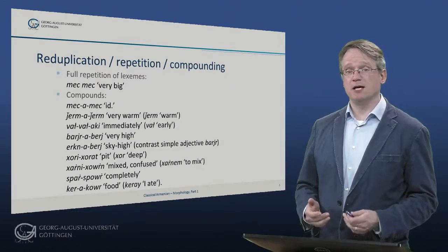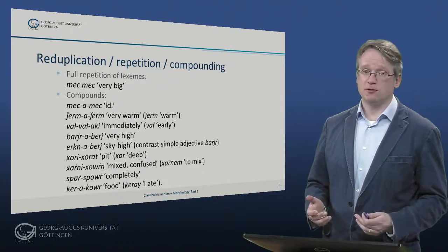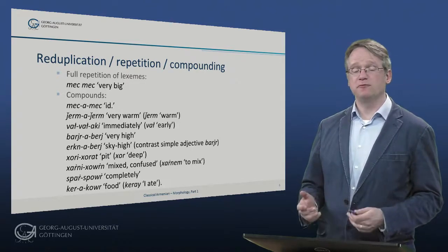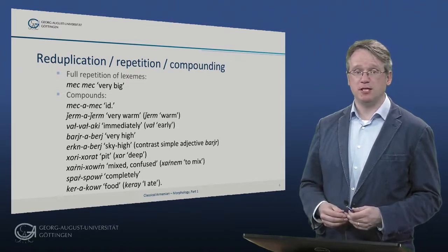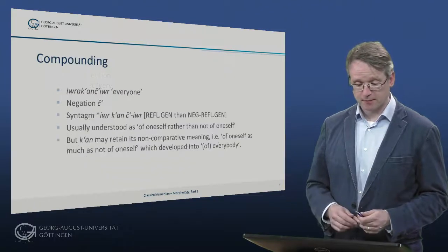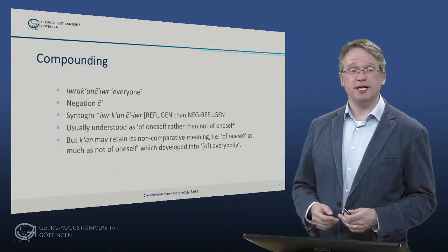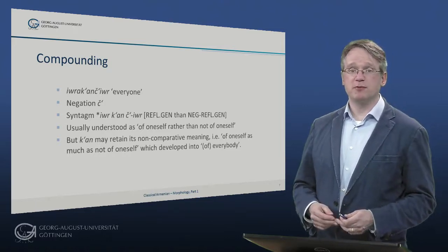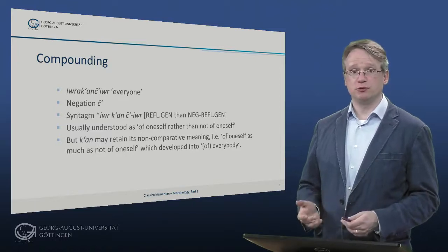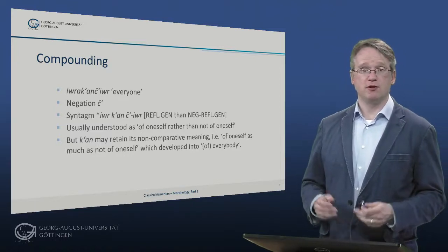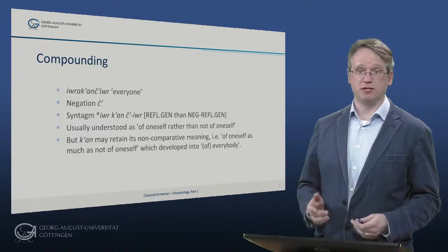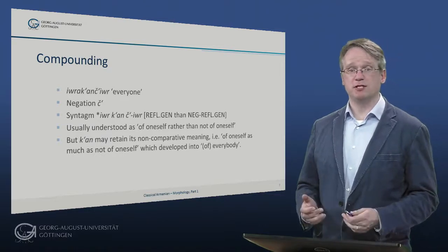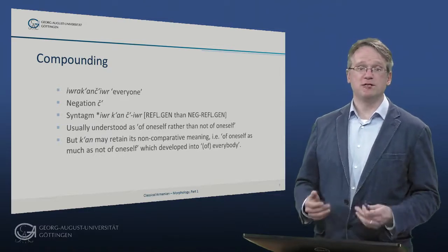There's also jerk-ner-berts – sky high. We can also compare forms like harni-churn – mixed, confused, spar-re-spur – completely, and kera-kur-fud, for words where the vowel changes. An especially interesting case is jerk-an-tsjur – everyone, which includes the negation tsch. It probably derives from a syntactic phrase jerk-an-tsjur. The pronoun is usually understood as of oneself rather than not of oneself, so probably of oneself as much as not of oneself, which then developed into everybody.